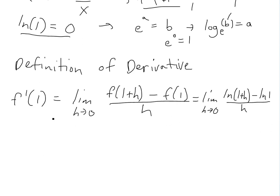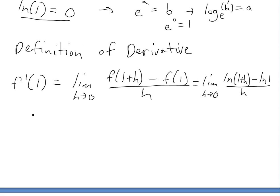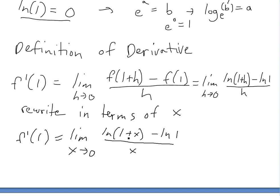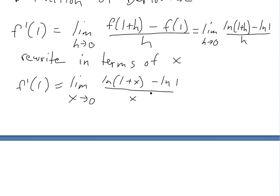And also just to rewrite it, to get rid of the h, I just want to rewrite it in terms of x. So we're just going to go f'(1) equals limit as x approaches 0, just replacing the h with an x. So this is used more often. So now if we simplify this, this is 0, which I showed above, then we're just going to get limit x approaches 0 of ln(1+x) over x divided by x.